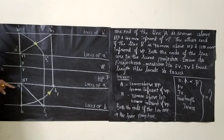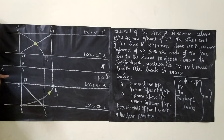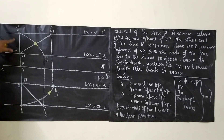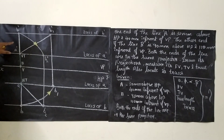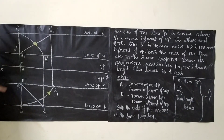Now, when you extend point V vertically above, this line will meet your front view A' dash B1 dash at one point — that point is called your vertical trace.